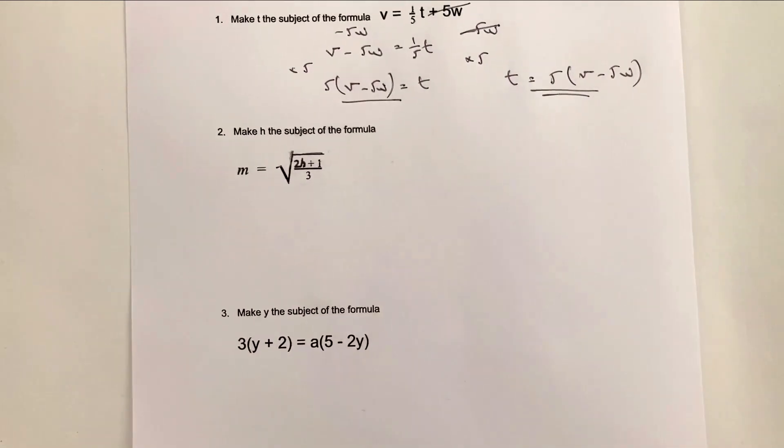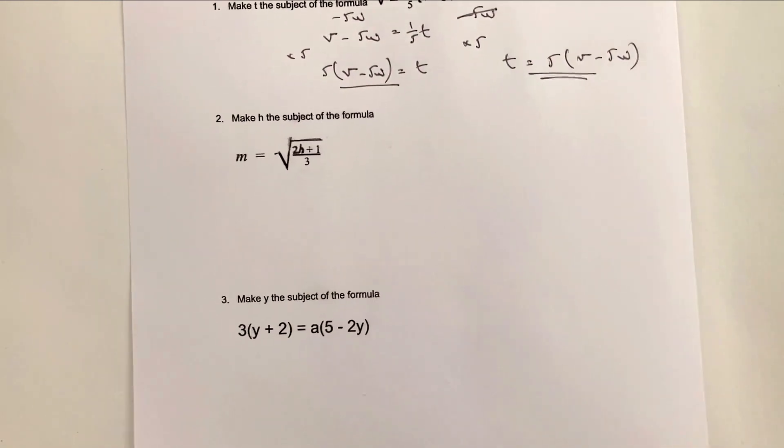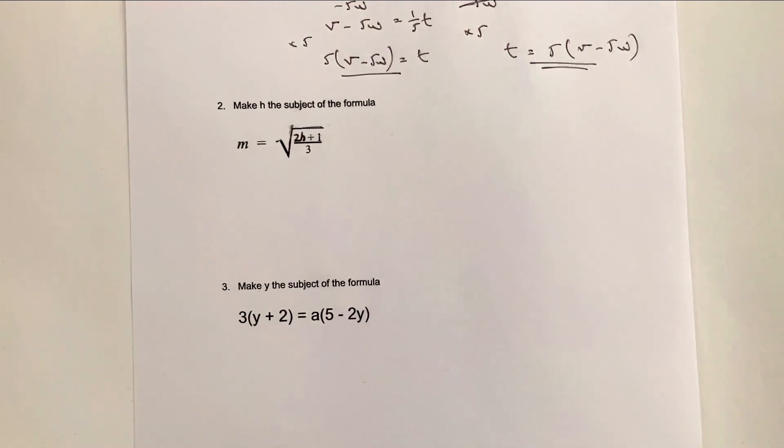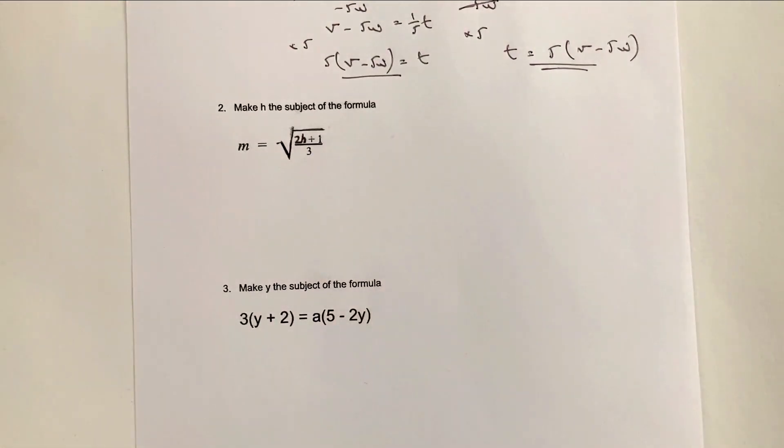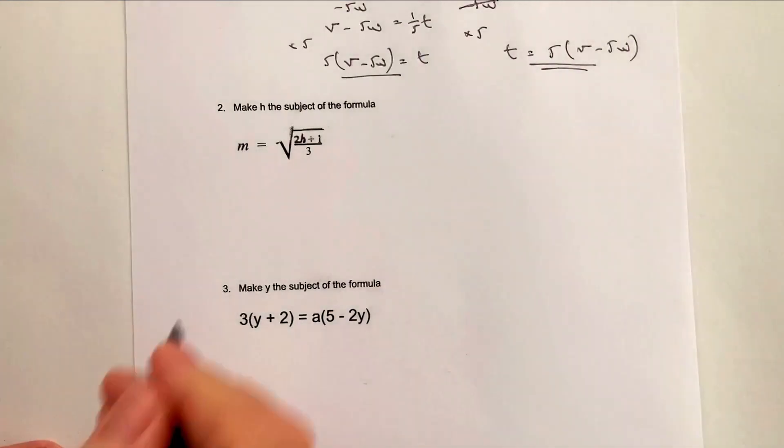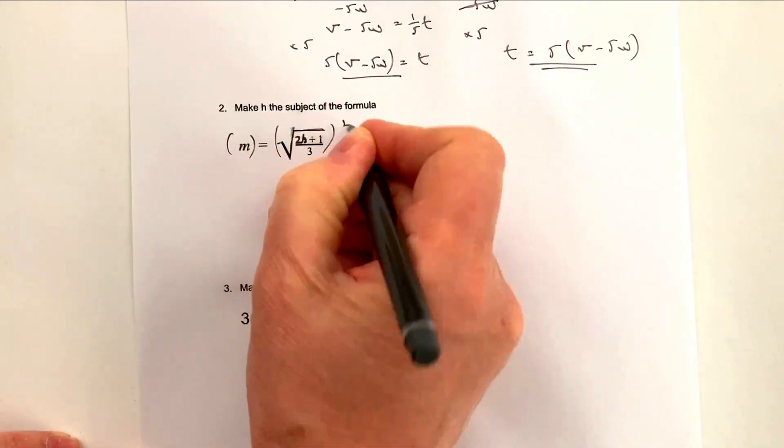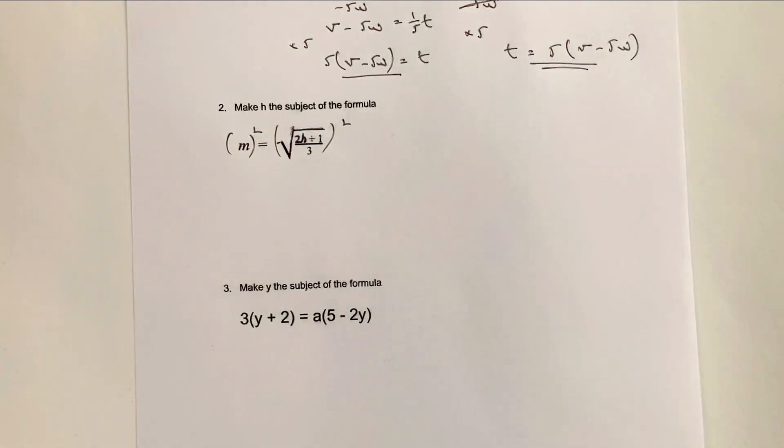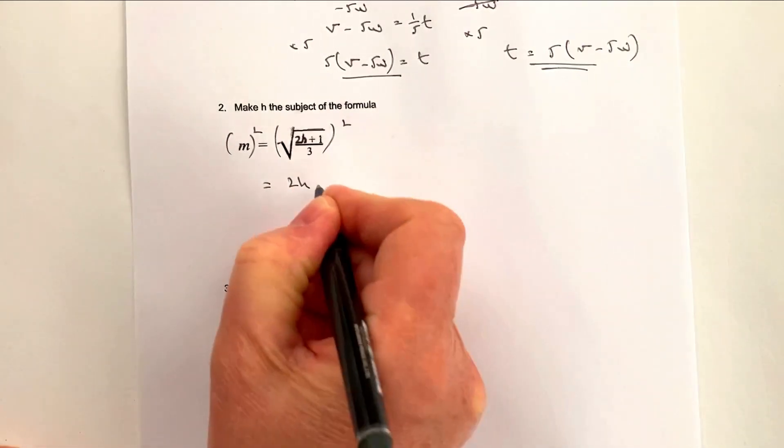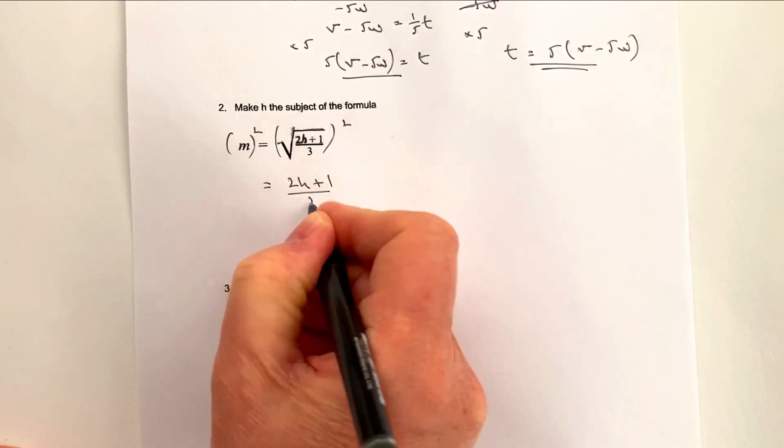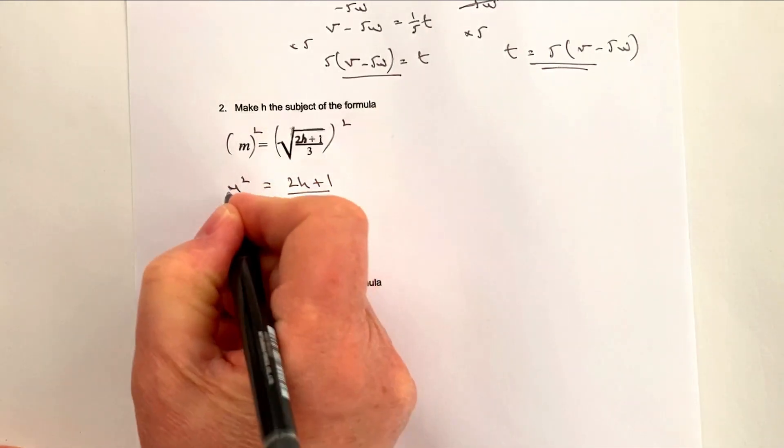So let's move on to question number two. Make h the subject of the formula. I'm really sorry about my dreadful printer. Hopefully you'll get the idea that we've got the square root of a fraction 2h plus one divided by three. So the first thing is I need to get rid of that square root. What I'm going to do is square both sides of the equation. Because the opposite of a square root is a square. So therefore on the right hand side I'm just going to get the fraction 2h plus one over three. On the left hand side I've got m squared.